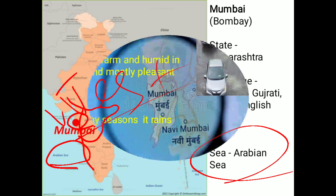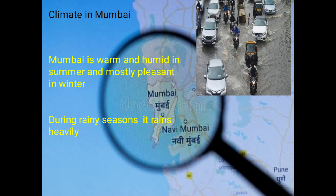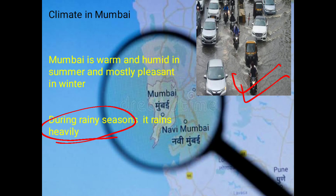Regarding Mumbai's climate: it is mostly pleasant in winter, but in the rainy season it rains very heavily — you can see stagnant water everywhere. The climate is warmer and humid in summer, pleasant in winter, but it rains very heavily during the rainy season. Mumbai is very famous for its monsoon.